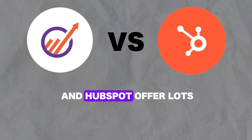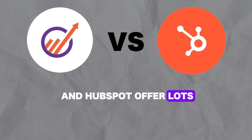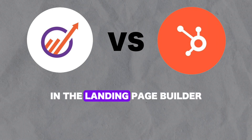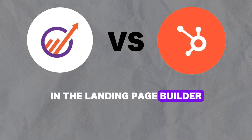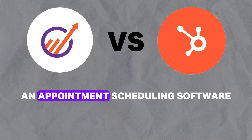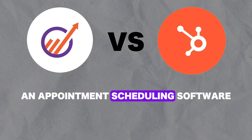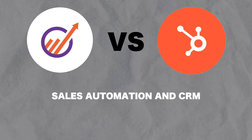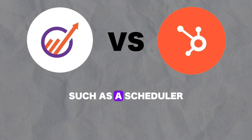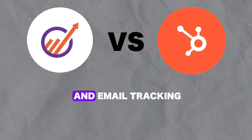Now let's compare their key features. Both EngageBay and HubSpot offer lots of features. Some features they have in common are contact management and the landing page builder. On top of that, EngageBay offers a live chat feature, an appointment scheduling software, sales automation and CRM, and much more. HubSpot also has some more features, such as a scheduler and email tracking. So that's how they stack up against each other in terms of features.